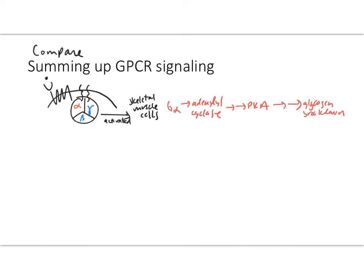We also looked at G alpha in neurons and how when it activated adenylyl cyclase, it led to PKA activation, but in that case went to the nucleus and triggered transcription.